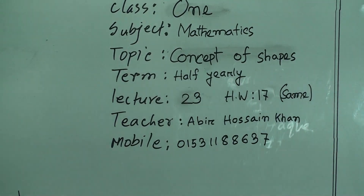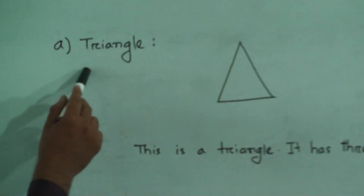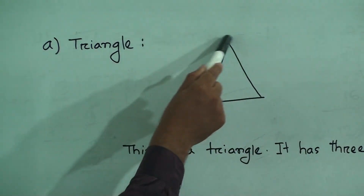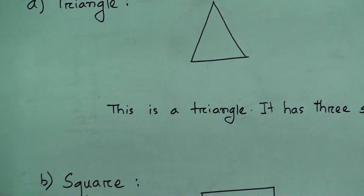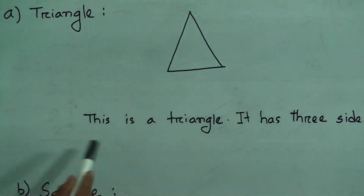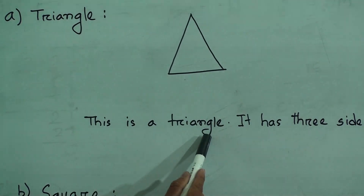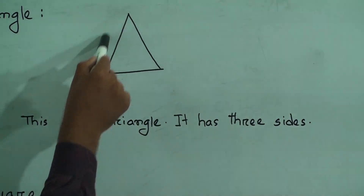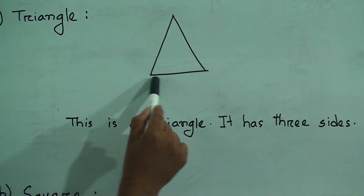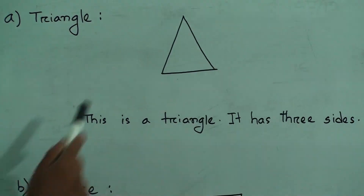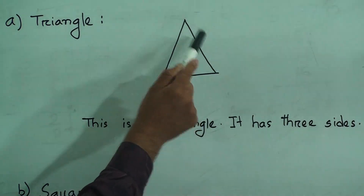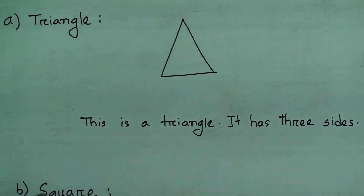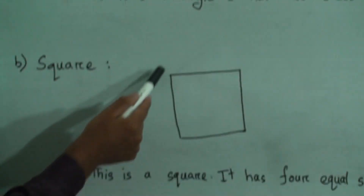My dear students, let's start our class. First one is triangle. Look, this shape is called triangle. It has three sides — this one, this one, and this one. So it has one, two, three sides.